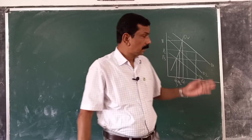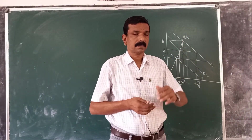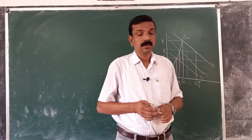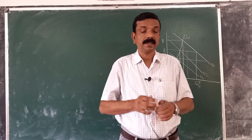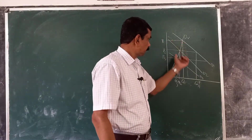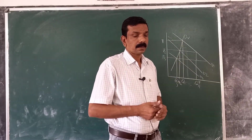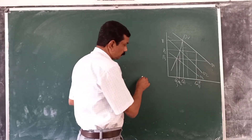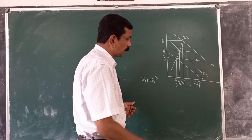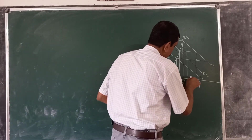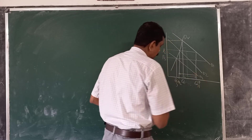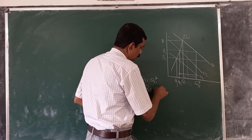Now, as in the case of bandwagon effects, it is possible to segregate the total effect into a price effect and a Veblen or snob effect. As P decreases from P1 to P2, the price effect is Q1 to Q star 1. But the Veblen effect is Q2 to Q star 1.